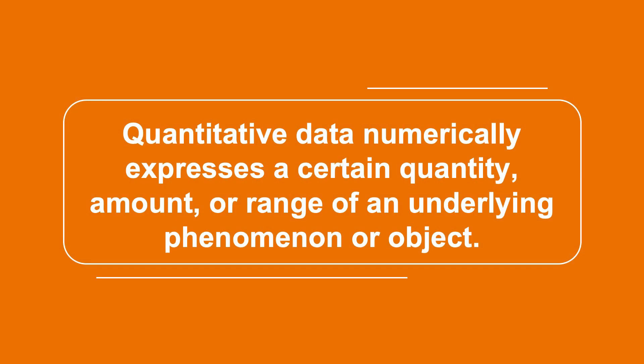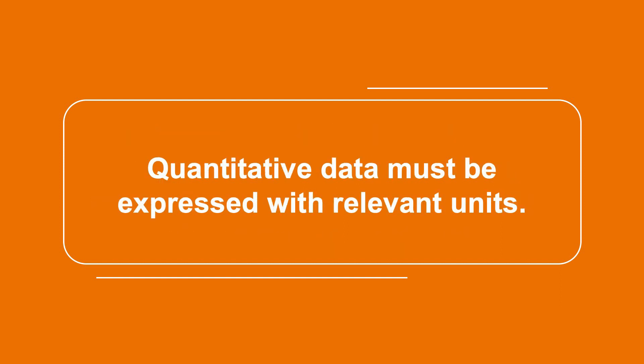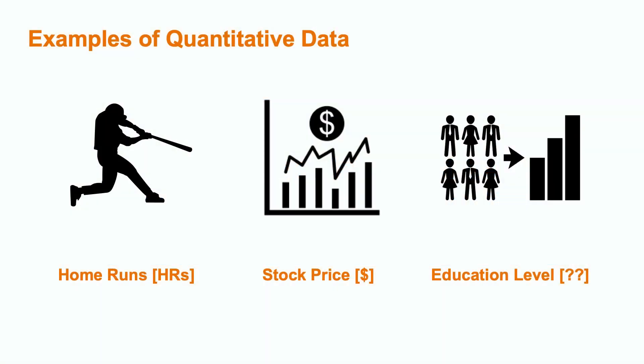In general, quantitative data numerically expresses a quantity, amount, or range of an underlying phenomenon or object. Quantitative data must also be expressed in terms of relevant units. So, in summary, our initial examples represent several types of statistical data. Home runs represent discrete quantitative data, stock price is an example of continuous quantitative data, and education level is an example of ordinal categorical data.